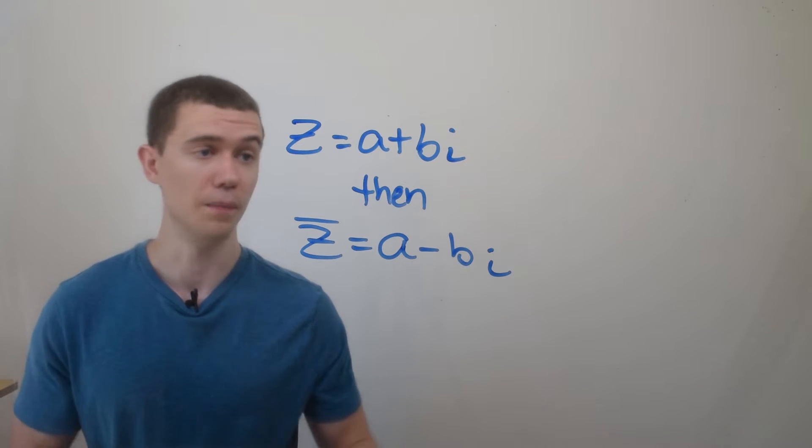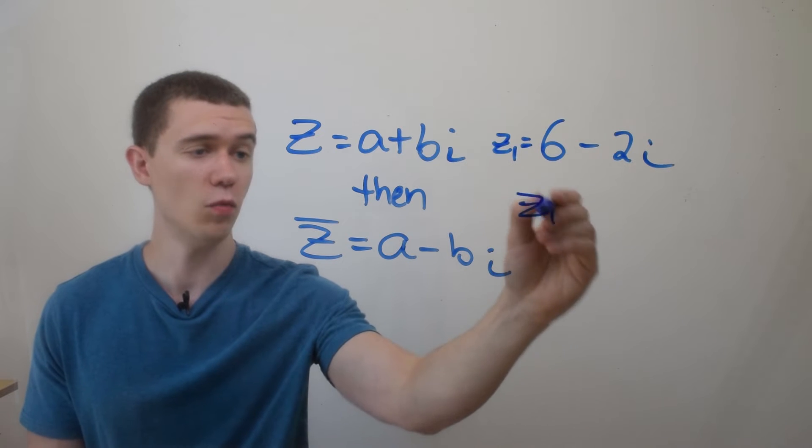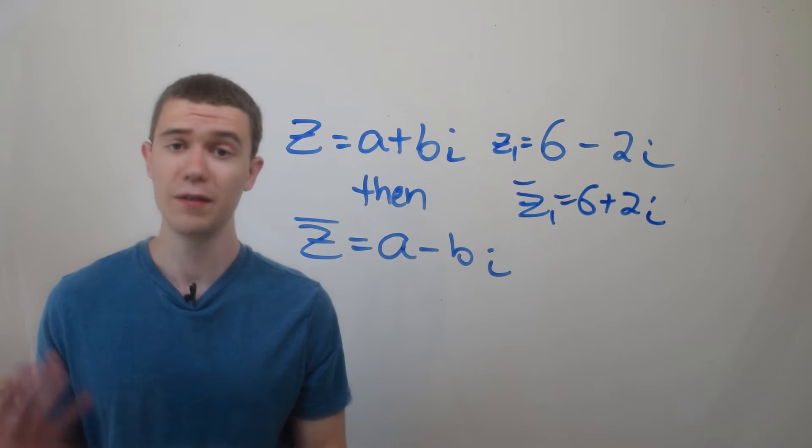So for example, if z1 is 6 minus 2i, then z1 conjugate would just be 6 plus 2i. Relatively easy.